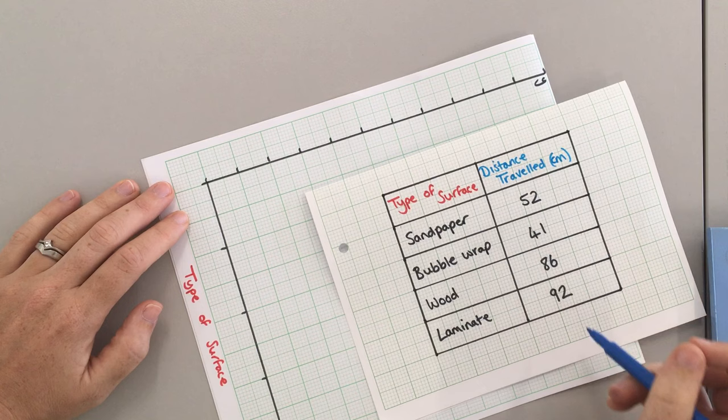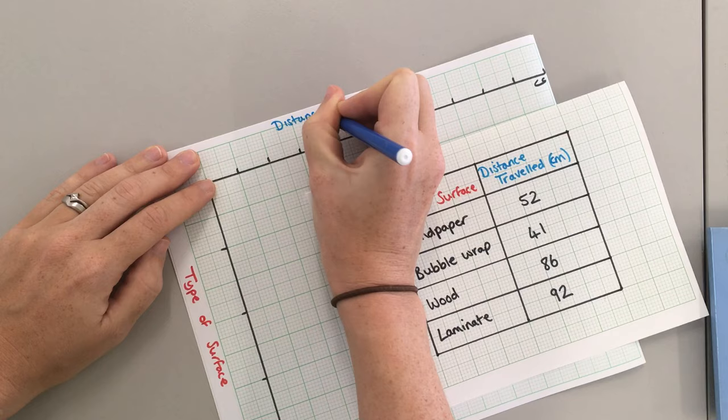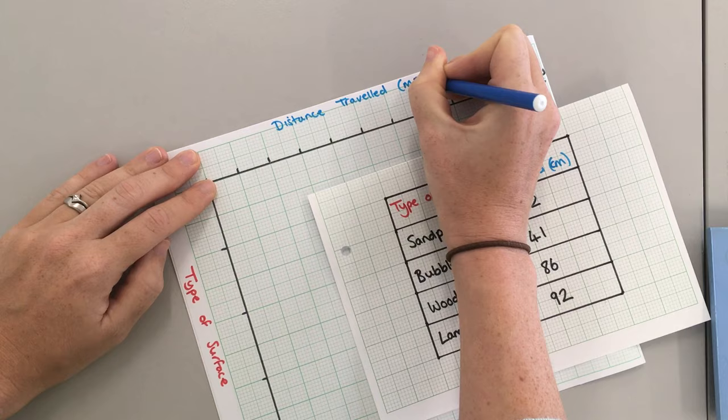For the y-axis, we put the dependent variable found in the right-hand column, the thing I'm measuring, which is distance travelled, and the units are centimeters.